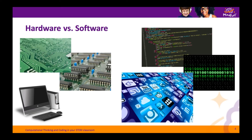Let's start by looking at technology. Technology is made up of two components: the hardware and the software. The hardware is anything that you would be able to physically touch. This includes the motherboard and other circuit boards and their components, the screen, the keyboard and the mouse.